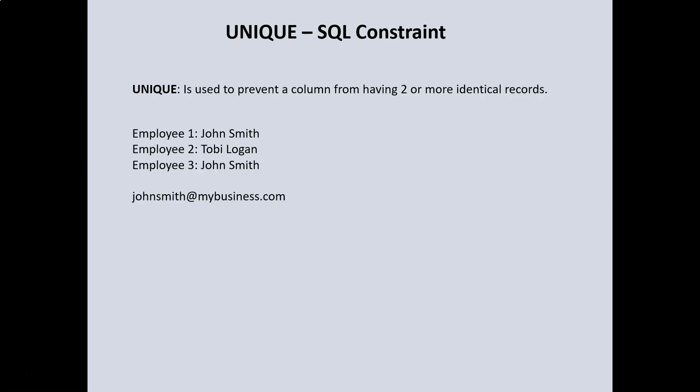Now we have employee one whose name is John Smith, and we have employee two which is fine. But then we have another employee who is also John Smith. How do we ensure that when we are creating emails for employees, two people don't have the same email? Because if that happens, it's a disaster — when we send an email to johnsmith@mybusiness.com, which John is getting that email? Is it employee one or employee three? We don't know. So we have to enforce a constraint on the back end such that when we generate emails for employees, no two people have the same email.